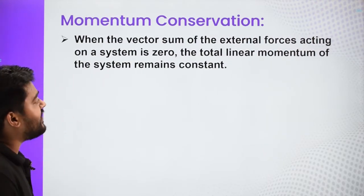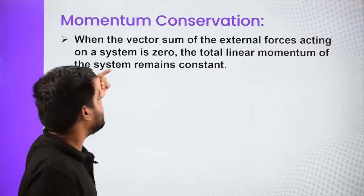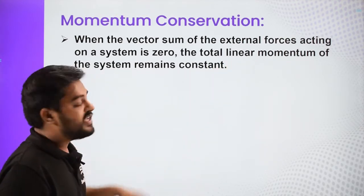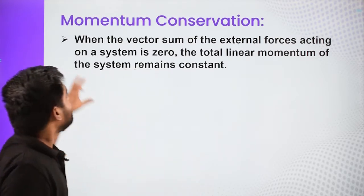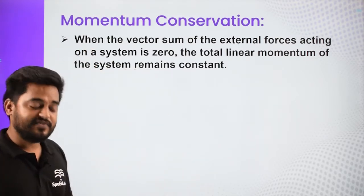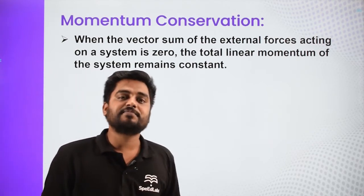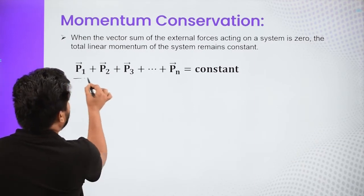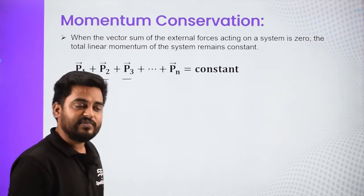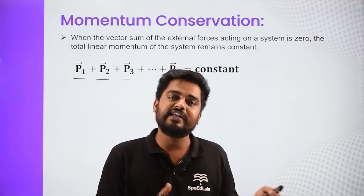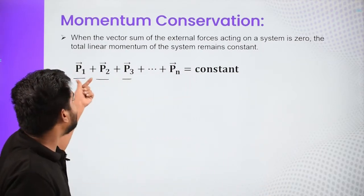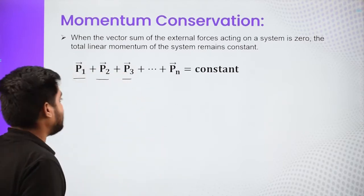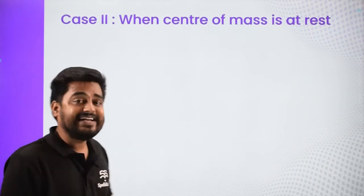When the vector sum of external forces acting on the system is zero, that is net F is zero, the total linear momentum of the system remains constant. This is the principle of momentum conservation — the statement of linear momentum conservation. To find total linear momentum, you find the linear momentum of each individual particle and, since it is a vector quantity, do the vector addition of all the linear momenta. That sum should remain constant.